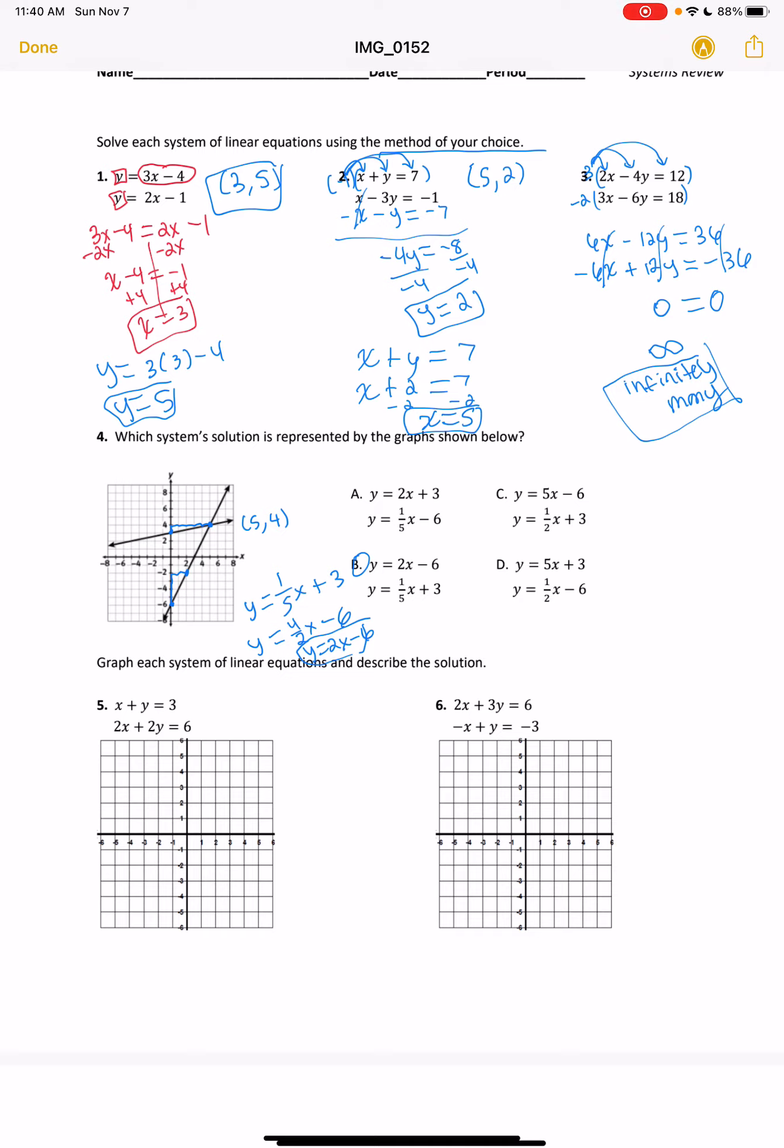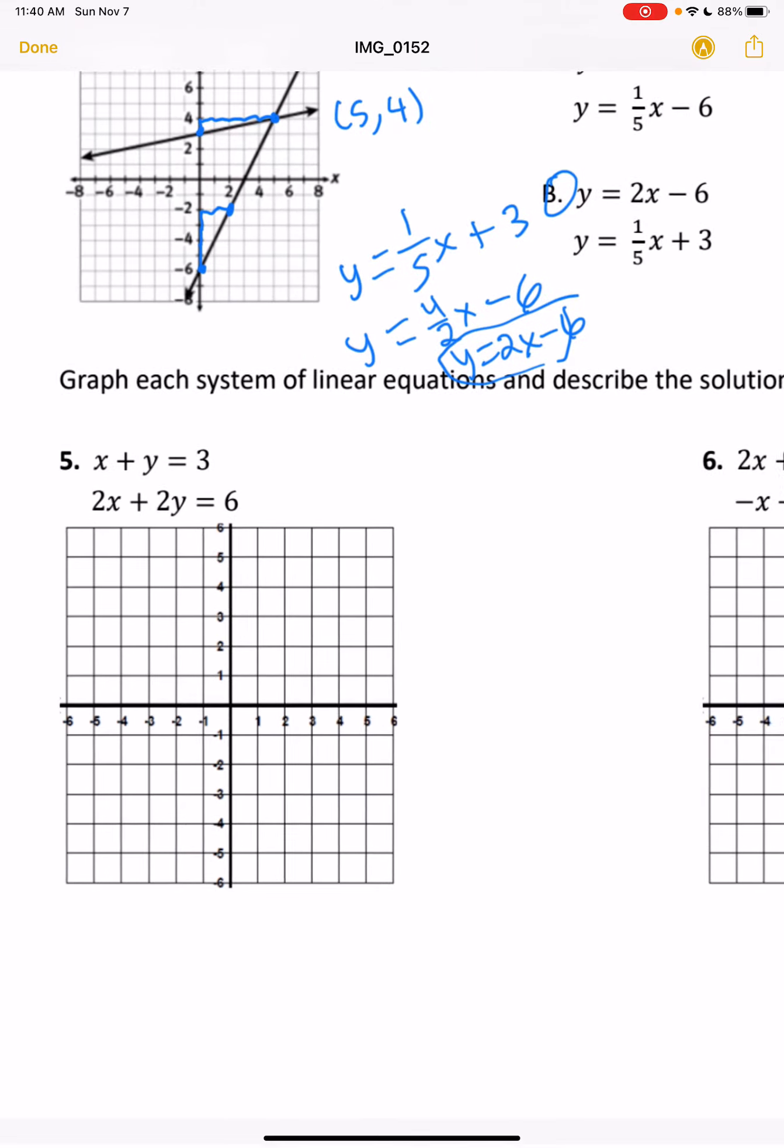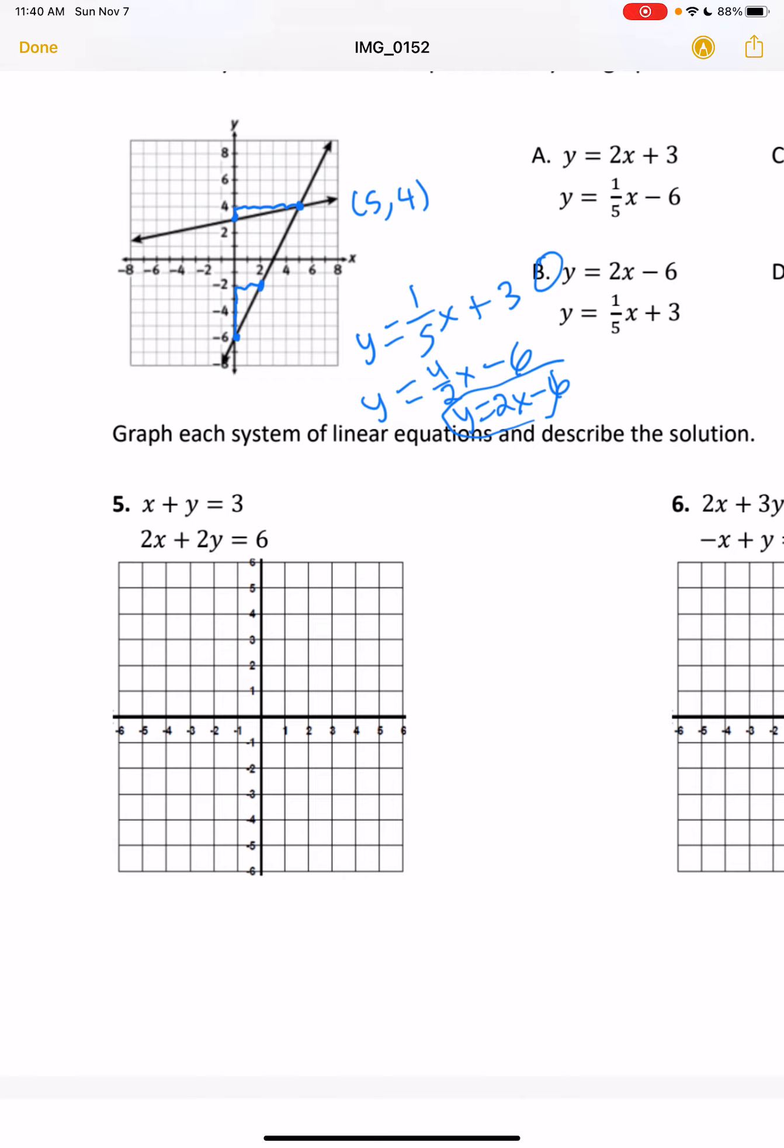Numbers 5 and 6, we are graphing those. They don't give us a choice. We have to graph them. So both of them need to be in y equals mx plus b form. The top one, we would subtract x from both sides before we graph.